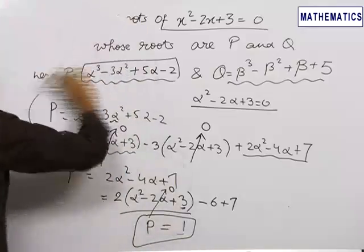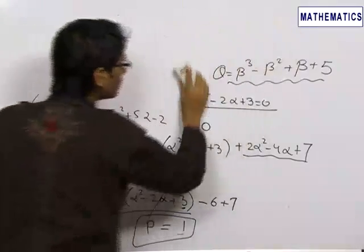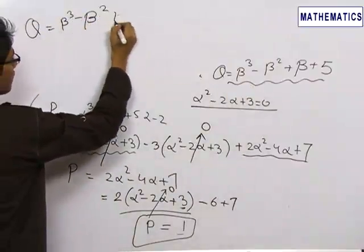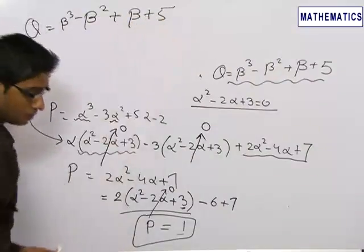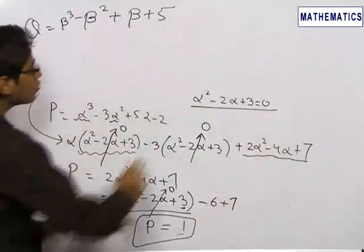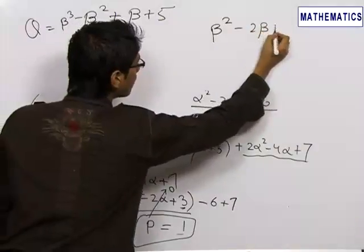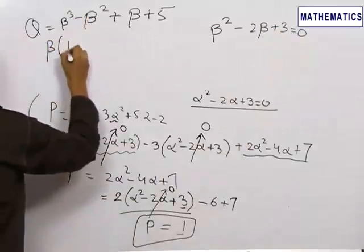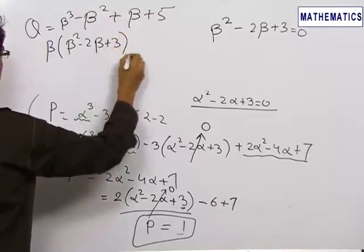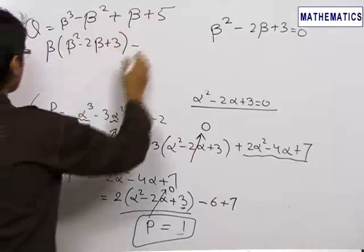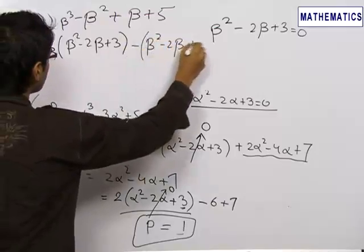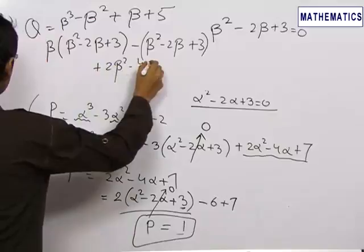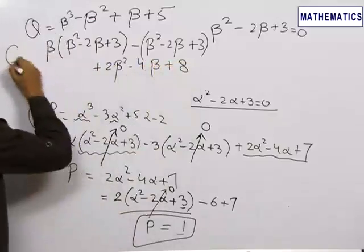In a similar fashion, we reduce q = β³ - β² + β + 5. Since beta is also a root of the quadratic equation, β² - 2β + 3 = 0. We reduce the cubic term by writing it as β(β² - 2β + 3), then handle the square term by writing -(β² - 2β + 3), and collect the remaining terms which are 2β² - 4β + 8.